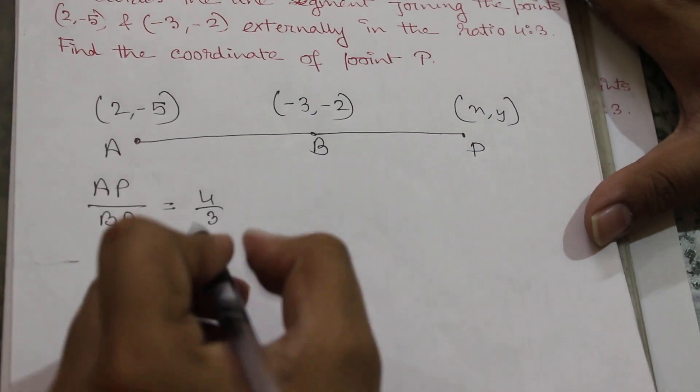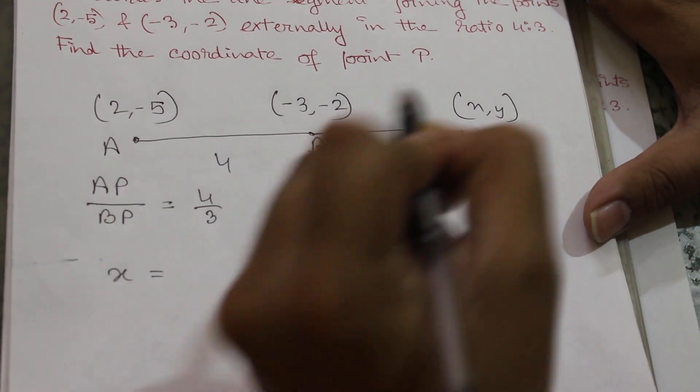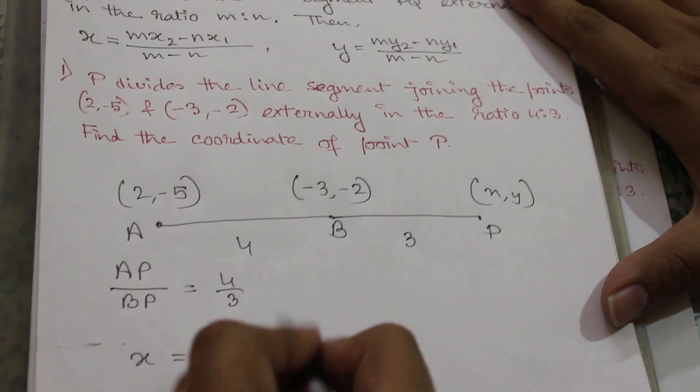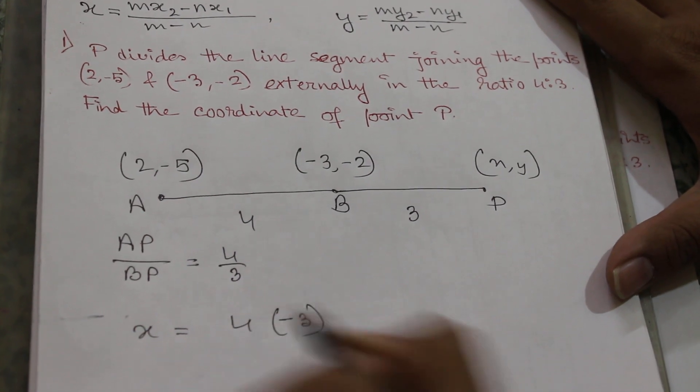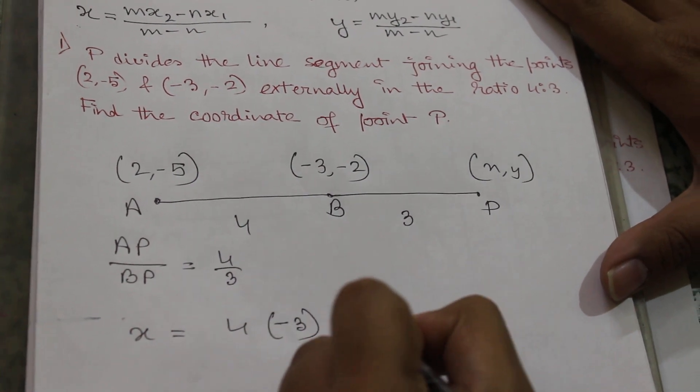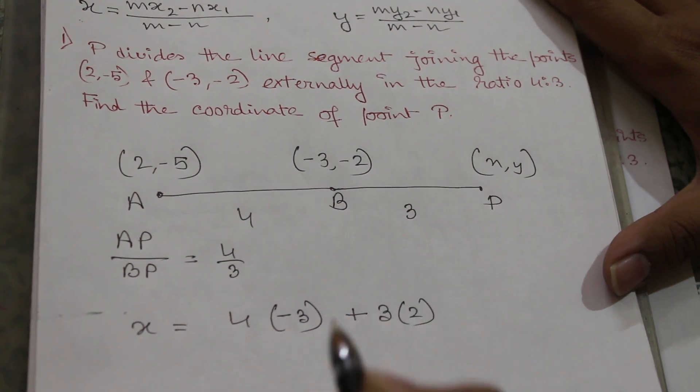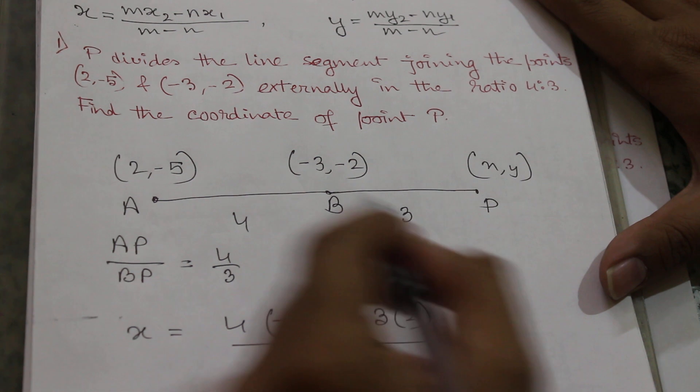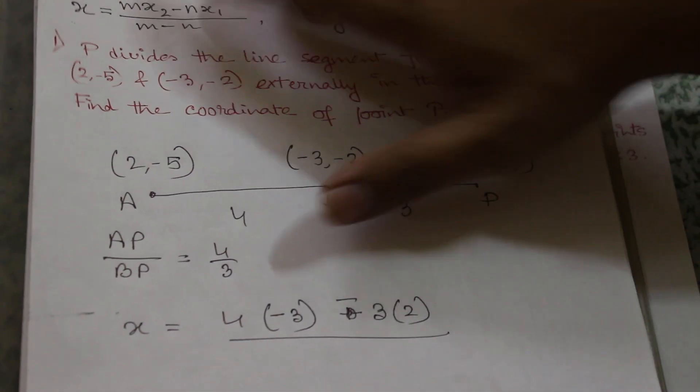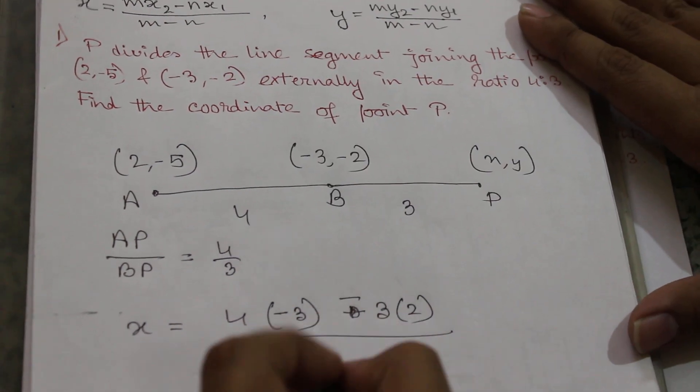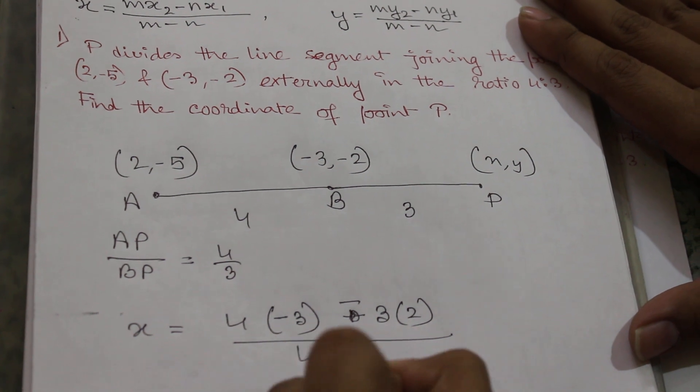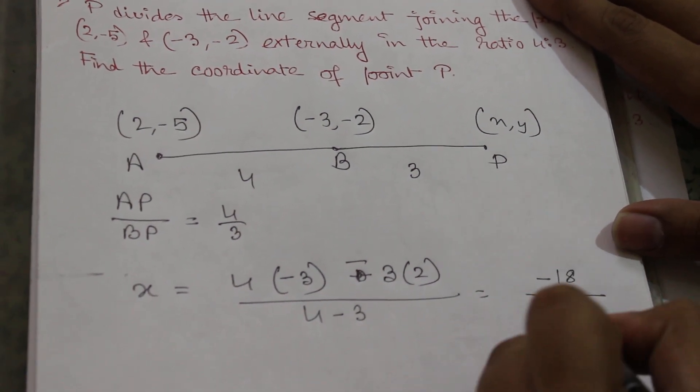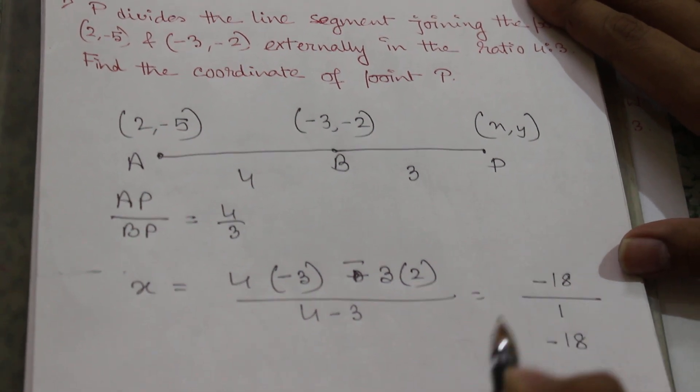m, that is 4, and this is 3. So 4 into (-3) minus 3 into 2 by 4 minus 3. So it will be equal to -18 by 1, that is -18.